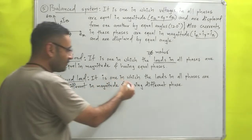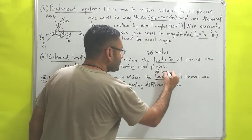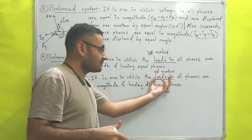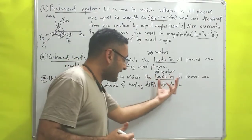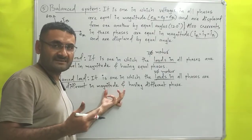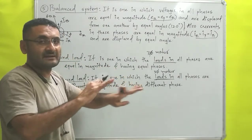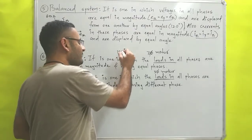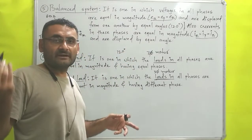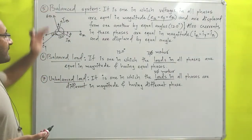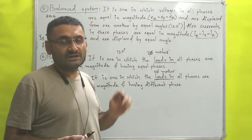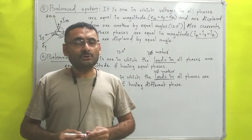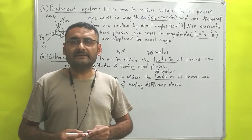The opposite is unbalanced load. In an unbalanced load, the three phases supplied by the generator to the three-phase motor or load have different magnitudes and different phase angles — for example, 60 degrees, then 180 degrees, rather than 120 degrees each. These are all the basic terms very useful for understanding three-phase AC circuits. I would like to end this video here — we will meet again with a new topic. Read hard, work hard. Thank you very much.